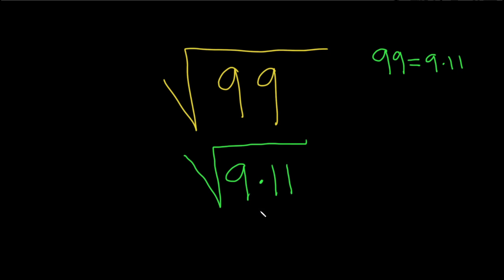And now you can use properties of square roots. You can write this as the square root of 9 times the square root of 11. And the square root of 9 is 3, and then we're just left with the square root of 11.